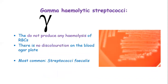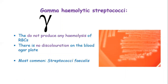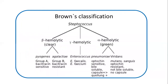Gamma hemolytic Streptococcus does not produce any hemolysis at all. If you place this Streptococcus on blood agar, the RBCs will not be broken down at all — so you would expect no discoloration, no green zones, and no clear zones, because nothing was done to the RBCs. You will just see the streaks of bacteria with no discoloration on the blood agar. The most common example of a gamma hemolytic is Streptococcus faecalis.